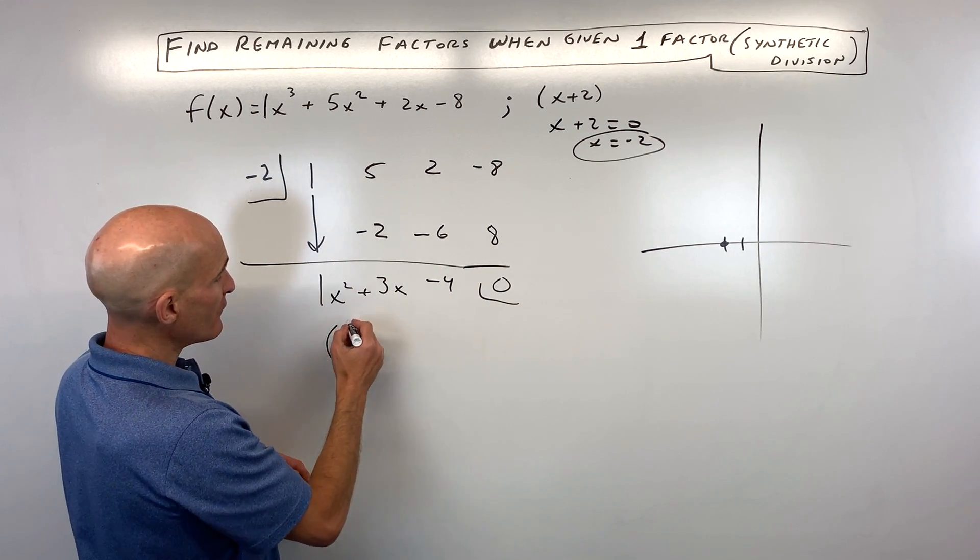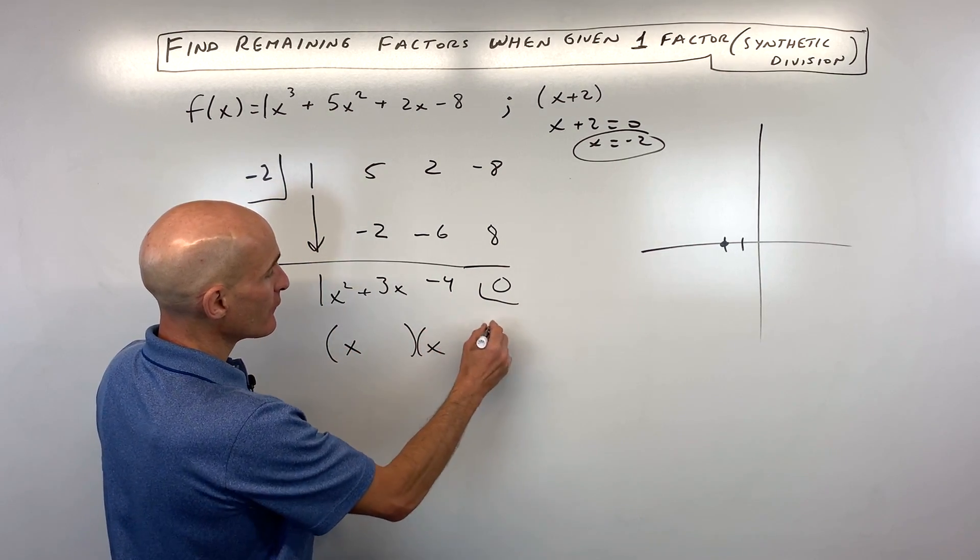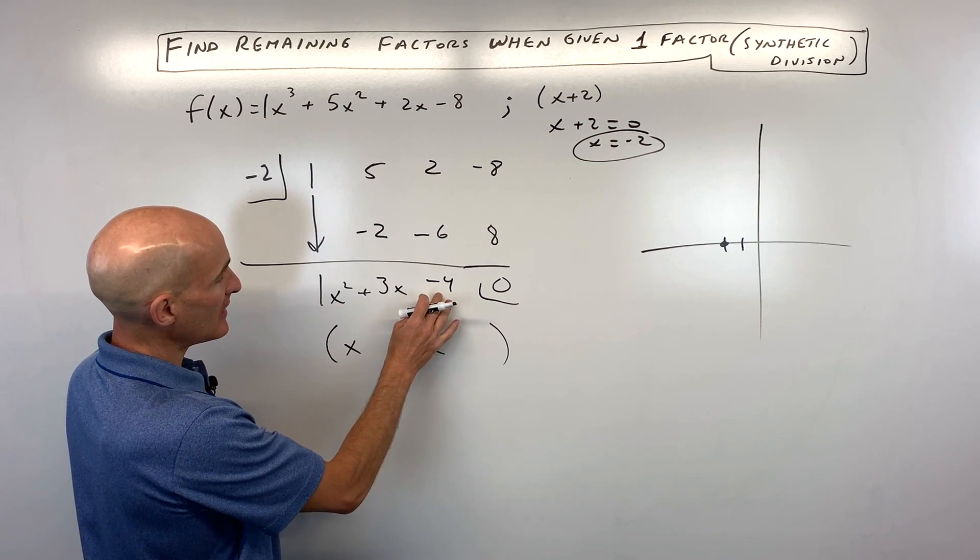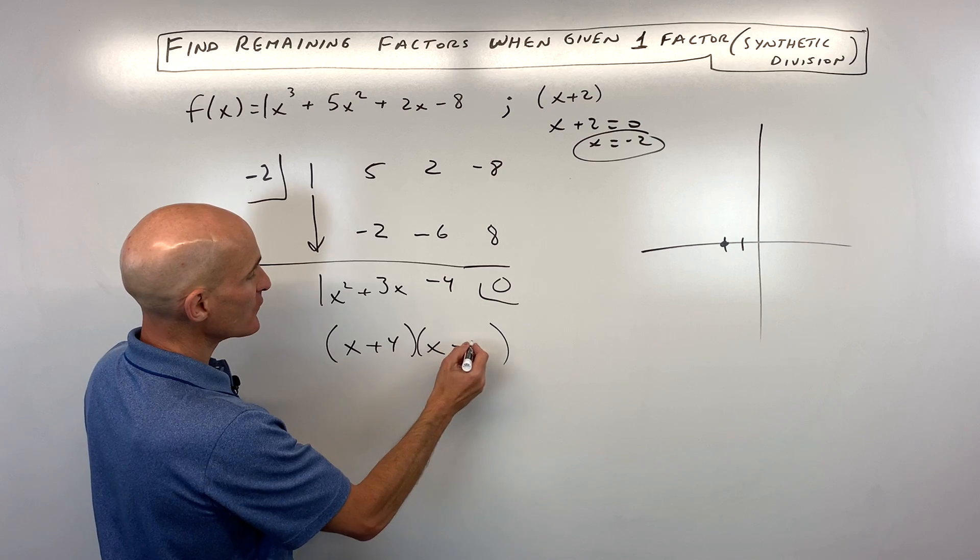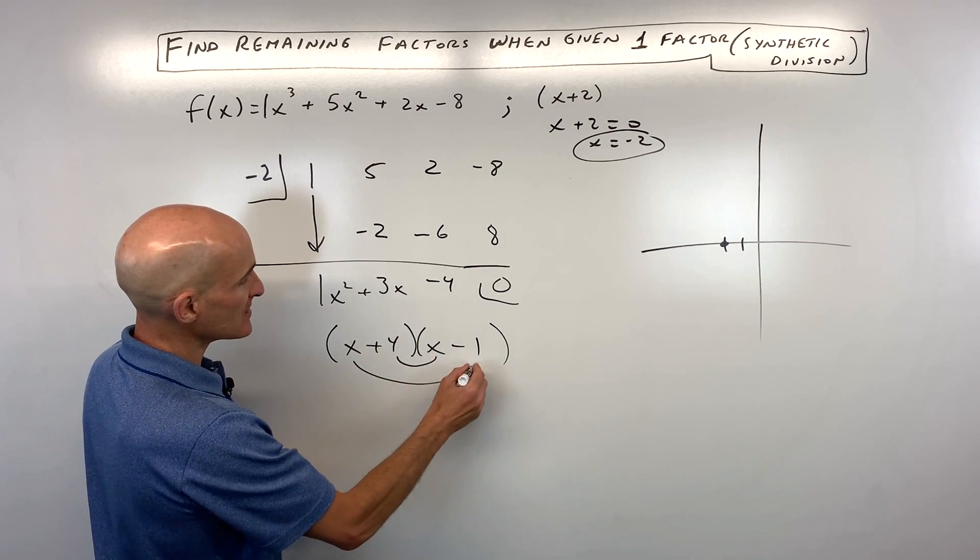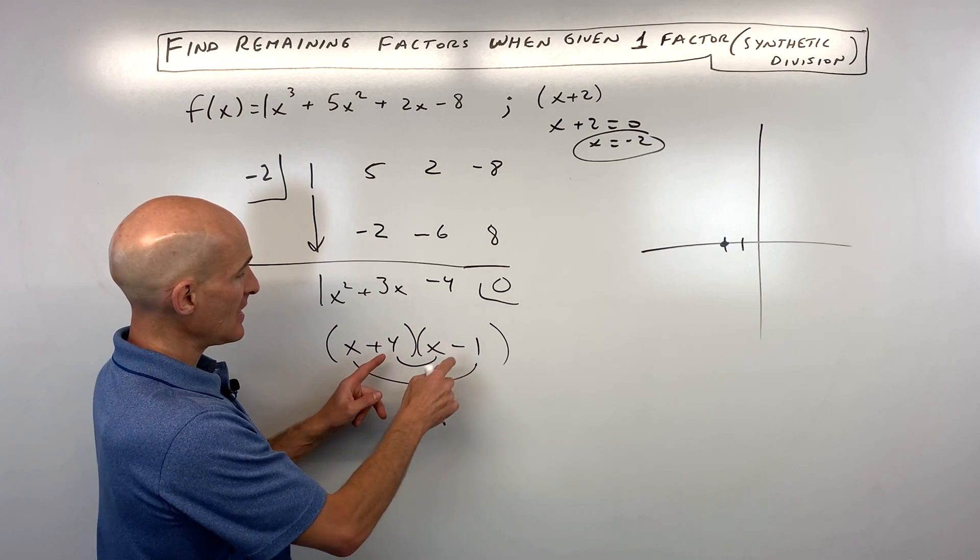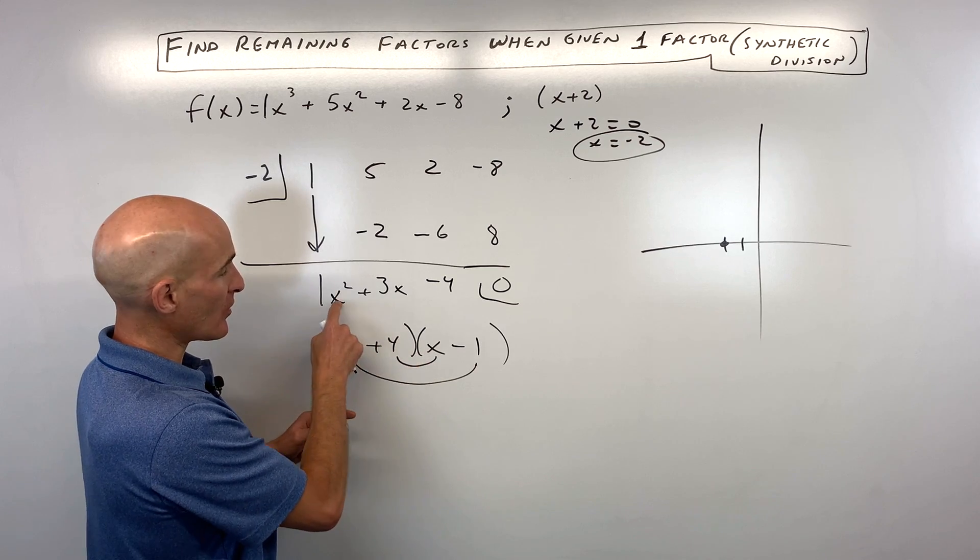Now what we can do is we can factor this further. We can say what two numbers multiply to -4 but add to positive 3? That's going to be positive 4 and negative 1. See, 4x and -1x adds up to 3x. 4 times -1 is -4, and we get our x² back.